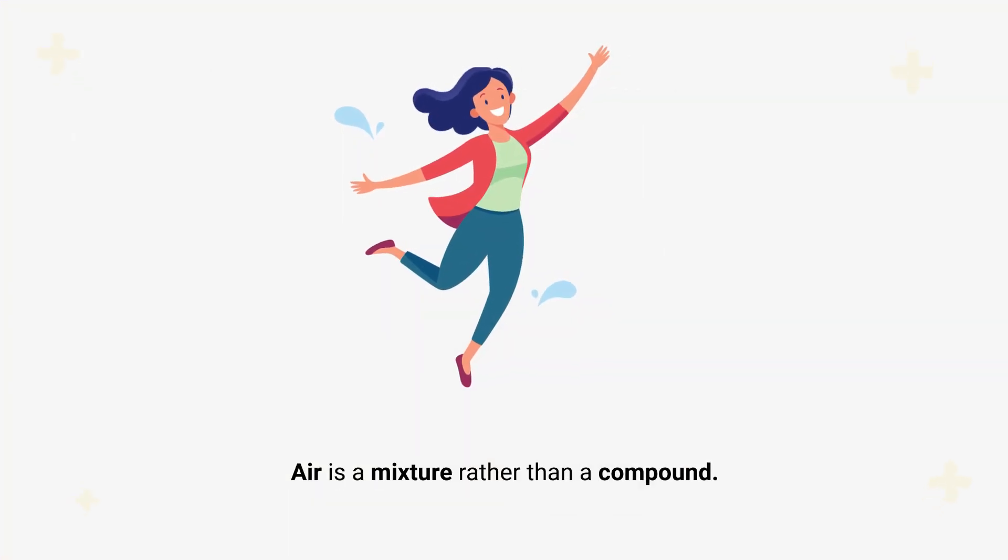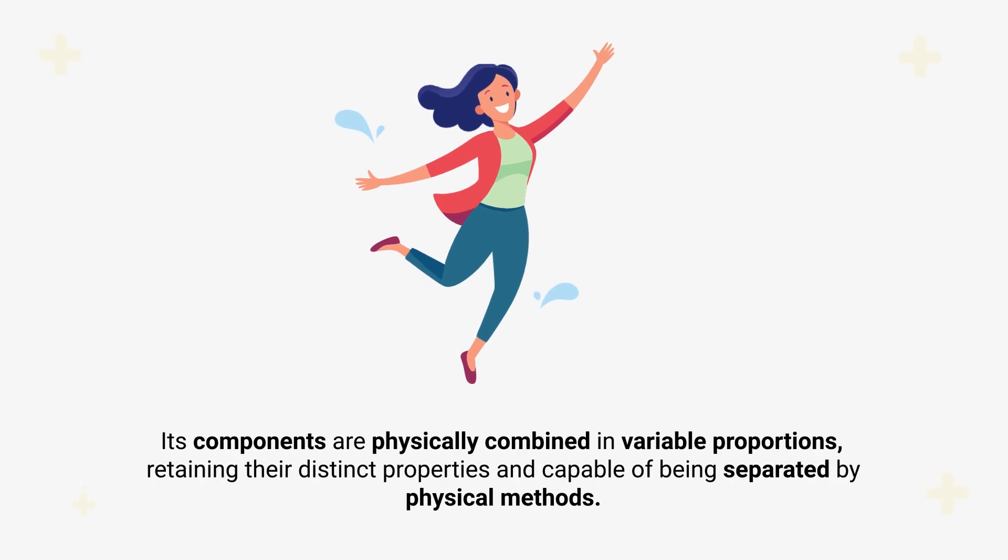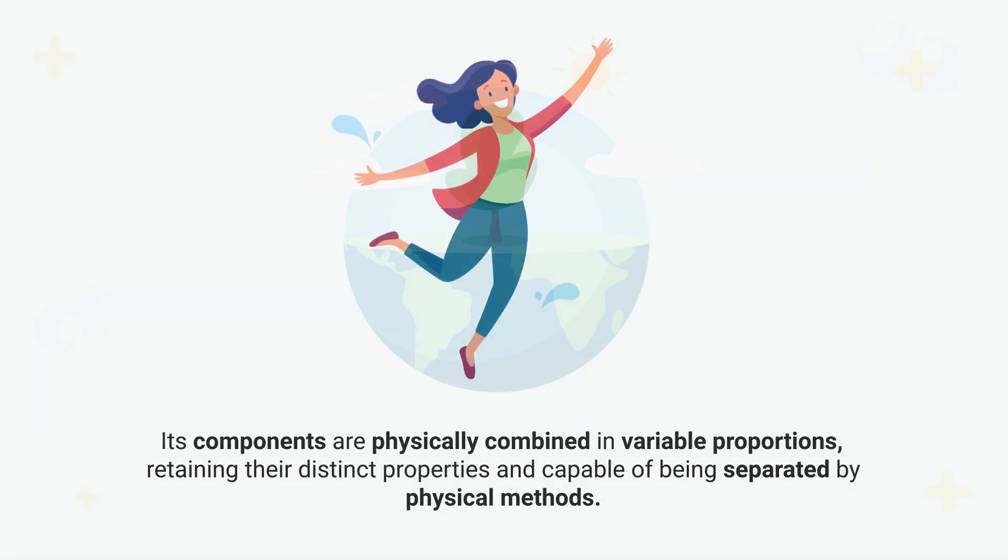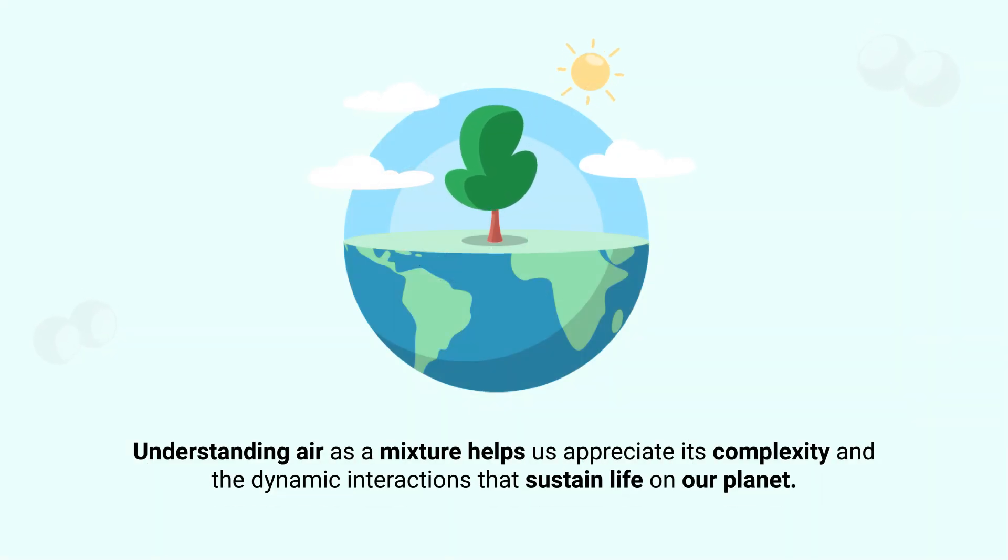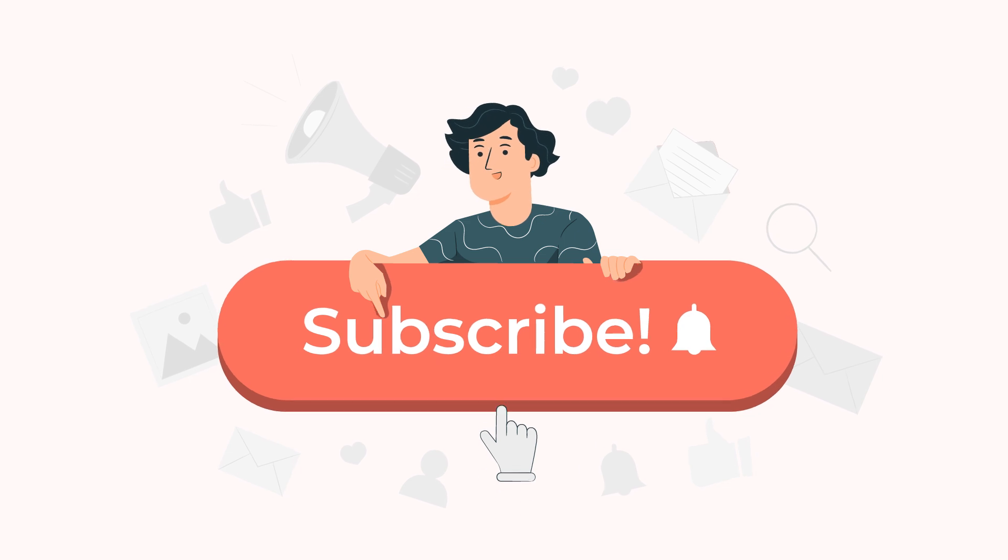So as we have established, air is a mixture rather than a compound. Its components are physically combined in variable proportions, retaining their distinct properties and capable of being separated by physical methods. Understanding air as a mixture helps us appreciate its complexity and the dynamic interactions that sustain life on our planet.